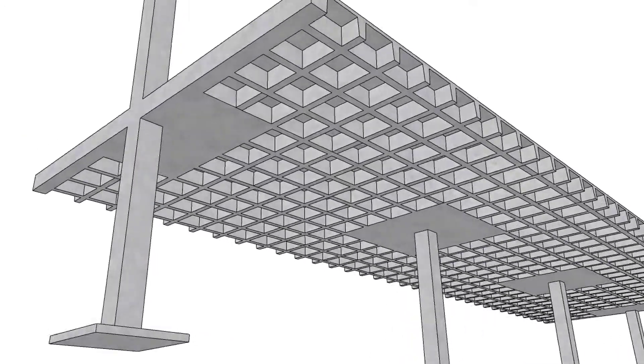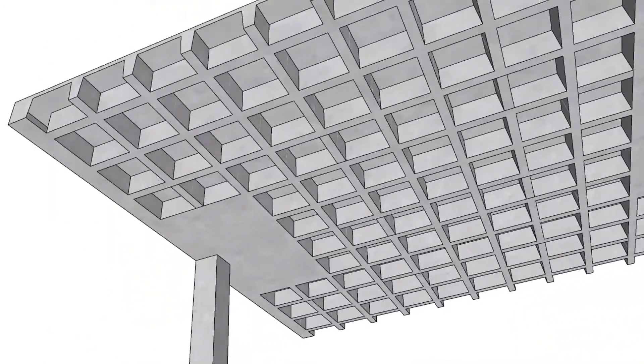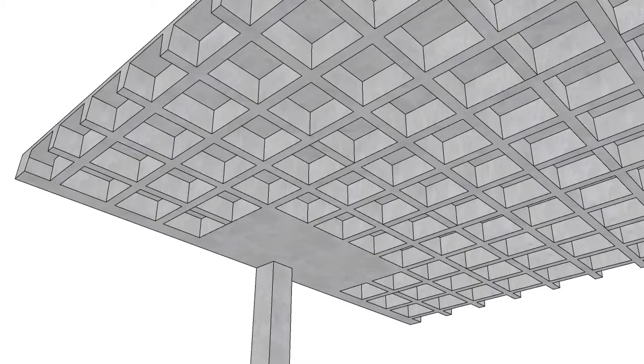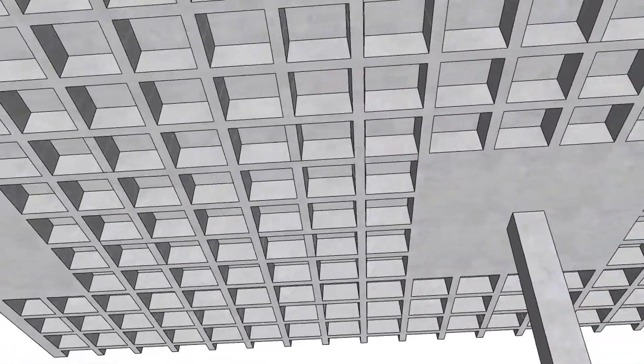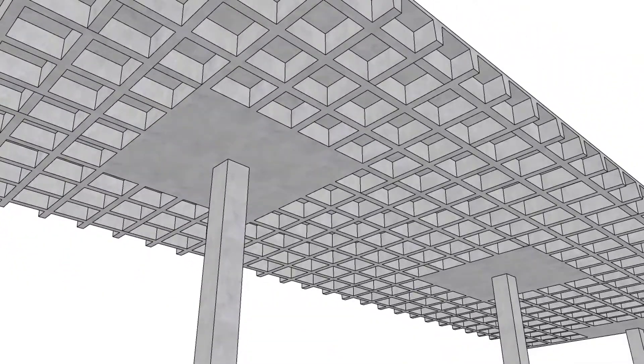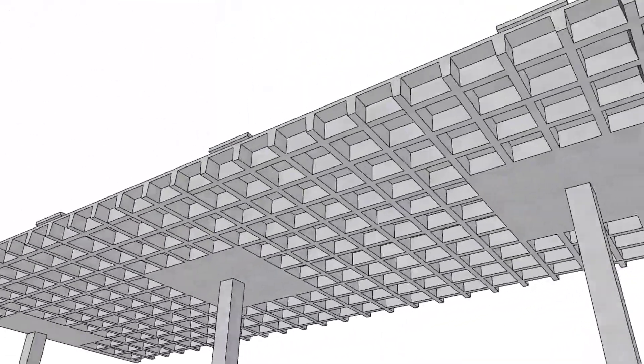The floor system is formed with domes that are 30 inches, 41 inches, and 52 inches wide, resulting in 3 foot, 4 foot, and 5 foot modules respectively. Solid heads acting as drop panels around the supports are provided for shear resistance.